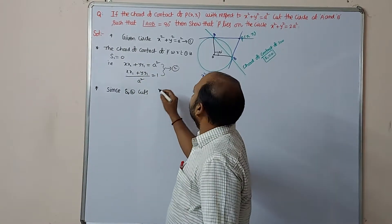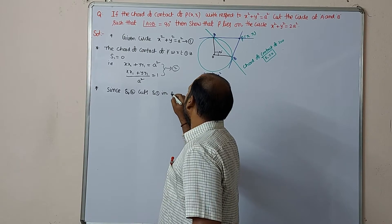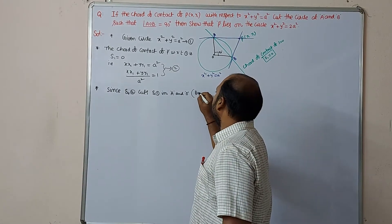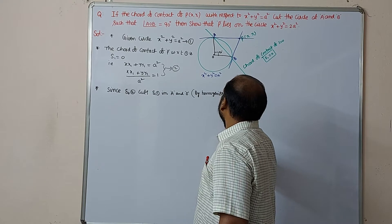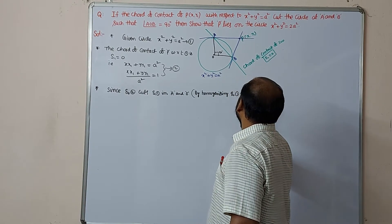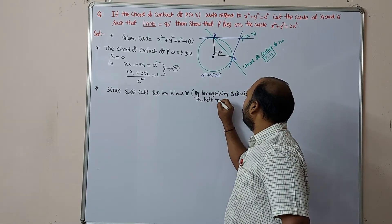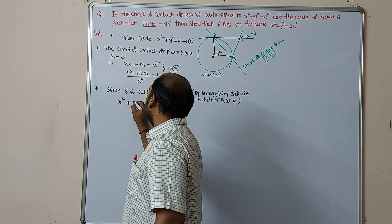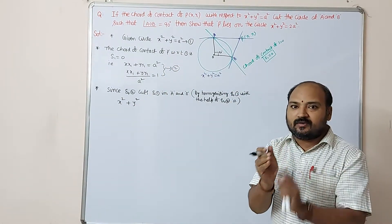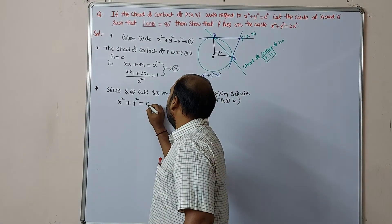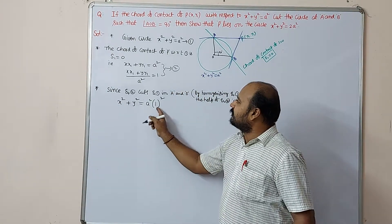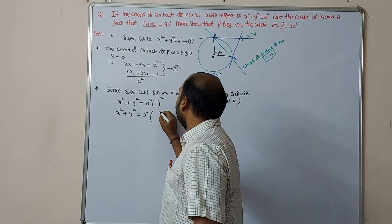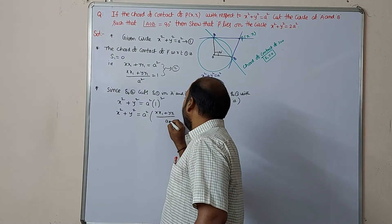Homogenizing equation 1 with the help of equation 2 — since equation 2 cuts equation 1 at A and B — wherever there is a constant term, substitute the value of 1 as (xx₁ + yy₁)/a². So x² + y² = a² × [(xx₁ + yy₁)/a²]², which simplifies to x² + y² = (xx₁ + yy₁)²/a².